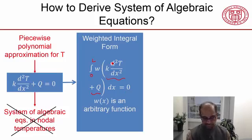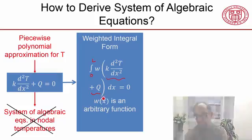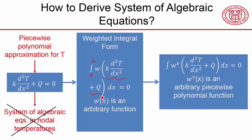The exact solution is going to satisfy that for any arbitrary W. And it's also going to satisfy that. But once I've assumed the shape for the temperature, there's no way I can satisfy this for any arbitrary function. So what do I do? I say, well, I won't satisfy this for any arbitrary W. I'll satisfy it for one particular shape of W.